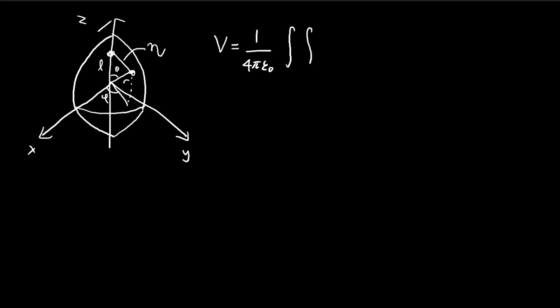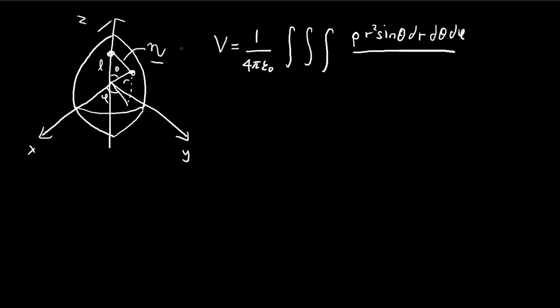Since it's a solid sphere that's uniformly charged, we're going to have to use a triple integral. Using the formula for potential, we have these constants times the amount of charge — the charge density — times a tiny unit of volume, which is the volume element in spherical coordinates. We're going to divide this expression by the distance from the point we're evaluating to the point where we want to measure the potential. I'm going to call this length eta.